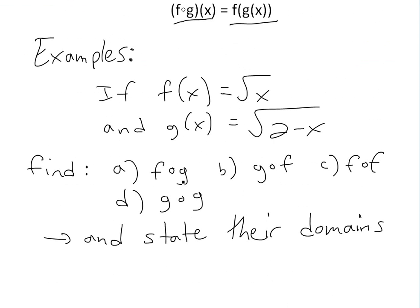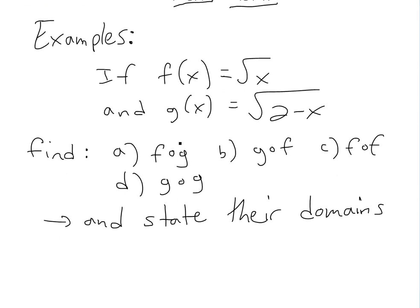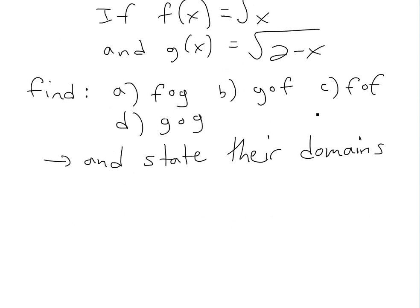For these four examples — a, b, c, and d — we're going to be based on these two functions. Let's say f of x equals the square root of x, and g of x equals the square root of 2 minus x. We need to find f circle g, g circle f, f circle f, and g circle g, and state their domains.